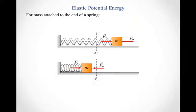The second potential energy we're going to talk about in dealing with our mechanical systems is elastic potential energy. That's the potential energy that's going to be built up when we have a mass moving around attached to the end of a spring. That's also going to be related to the work done by the spring force as that mass moves around.